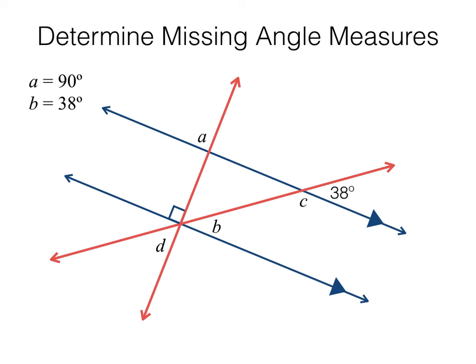Angle C forms a linear pair with the angle marked as 38 degrees; also, angle C forms a same-side interior angle with angle B, therefore angles B and C are supplementary. Angle D forms a vertical angle with the angle that is adjacent to angle B in the diagram, therefore angle D is complementary with angle B. The measure of angle D is 52 degrees.